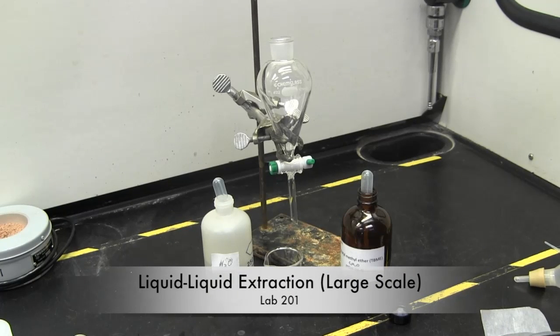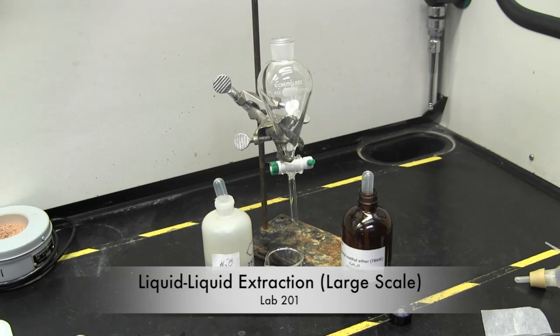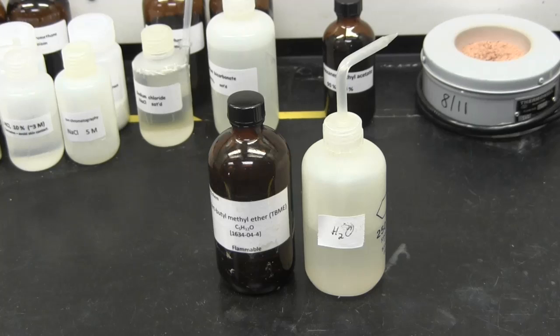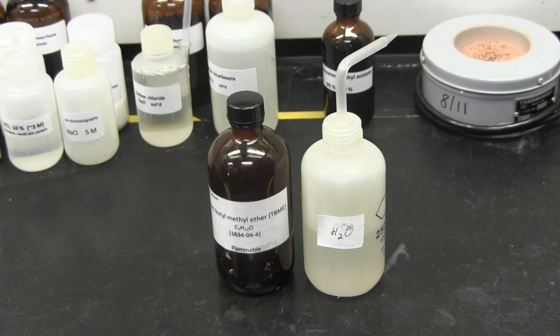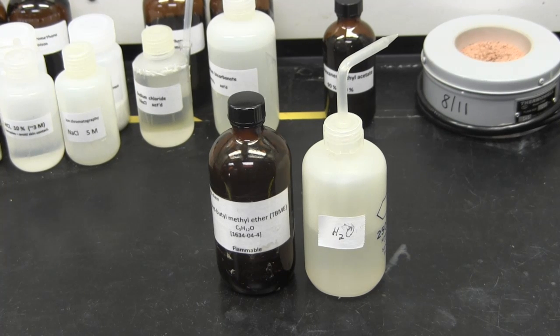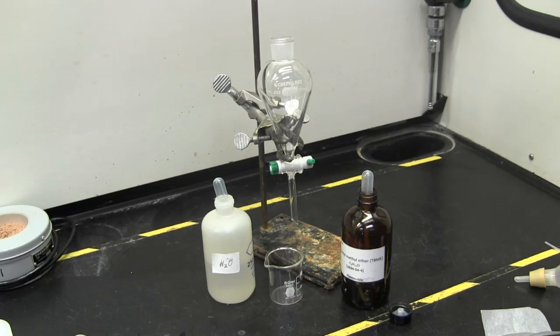In this lab, we will learn how to use two different solvents to separate two different solids. We will be doing this with a large-scale setup. The solvents we will use are TBME and water. However, you could use any two solvents, as long as they don't dissolve in each other. In most cases, one solvent is water and the other solvent is an organic liquid.